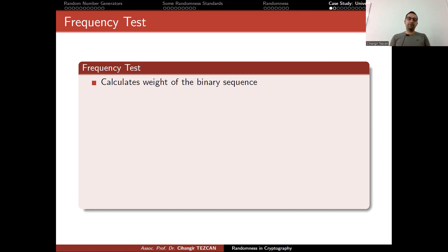Let's first start with why we need more than one test. Think about the frequency test - it just calculates the weight of the binary sequence. It counts the number of ones and sees if this number is half of the sequence length. If it is close to half of the sequence length, then it will pass the test.